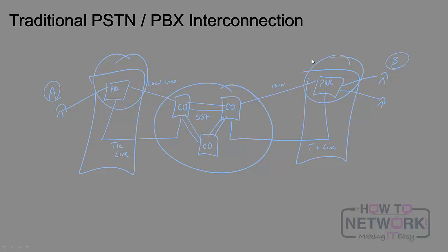Things are a little different with voice gateways. For a unified communications enabled location, we're still going to have that CO trunk — it might still be an ISDN PRI — however it's going to enter our premise and terminate to a device called a voice gateway. The voice gateway is going to be on our LAN along with other things like our call manager and IP phones. It's a different architecture than traditional, but the same PSTN concepts apply.